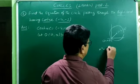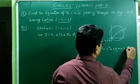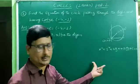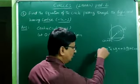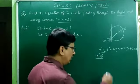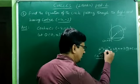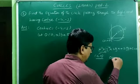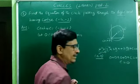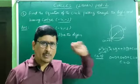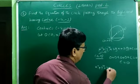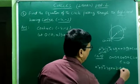The equation of the circle is x² + y² + 2gx + 2fy + c = 0. This passes through origin, meaning (0, 0) lies on the circle. Substituting (0, 0): all x and y terms become 0, so 0 + 0 + 0 + c = 0, giving c = 0.